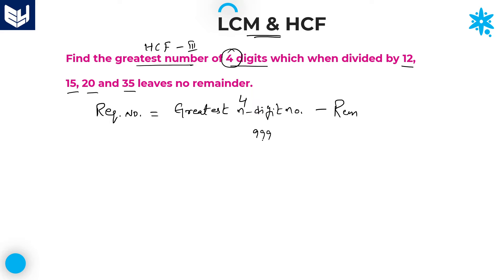The greatest four-digit number is 9999. Now, how do we get the remainder? By dividing the greatest four-digit number with the LCM of the given numbers. Many students are confused at this point — they calculate the HCF of the given numbers, but that is wrong. You always need to divide with the LCM only.